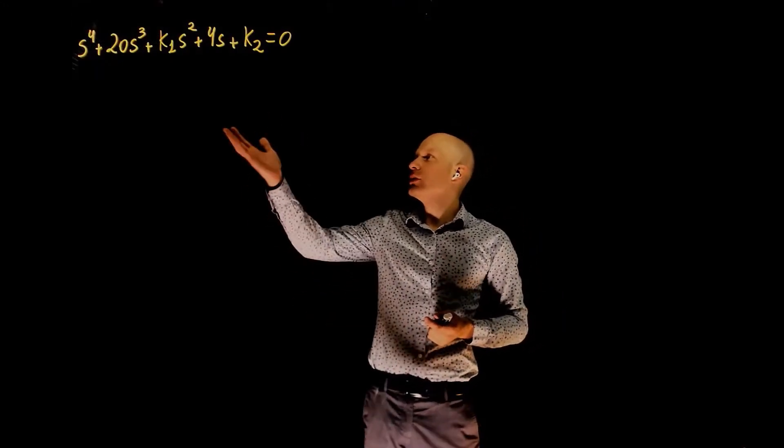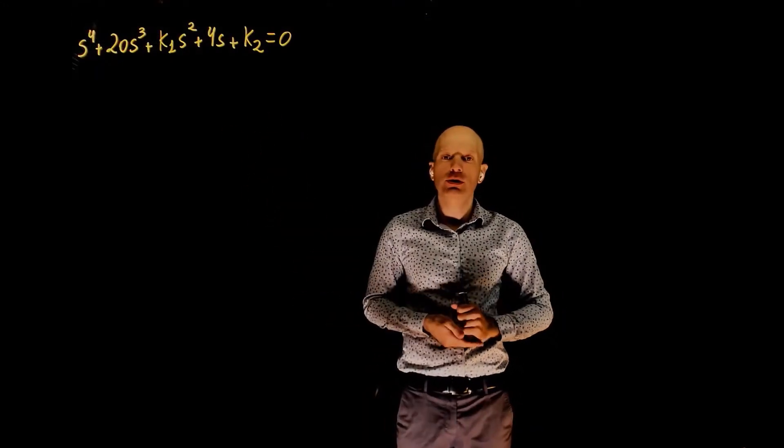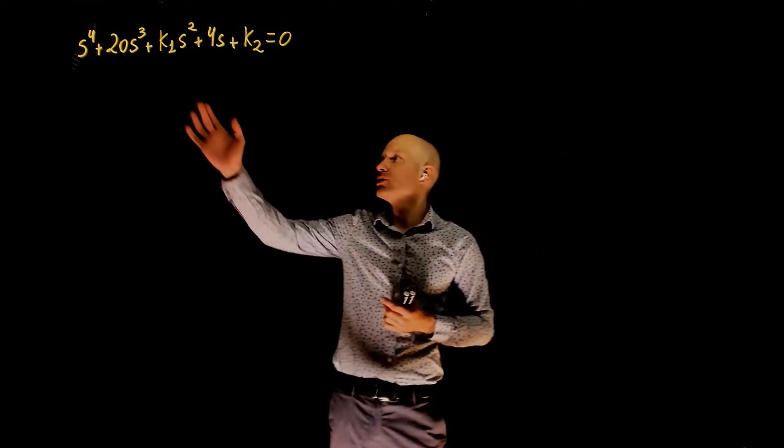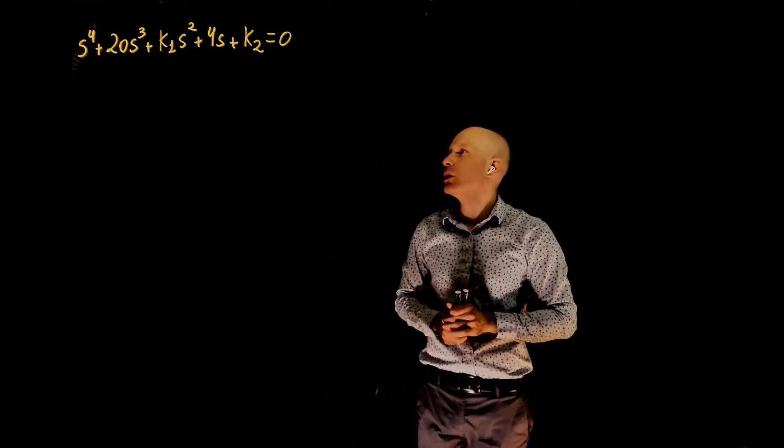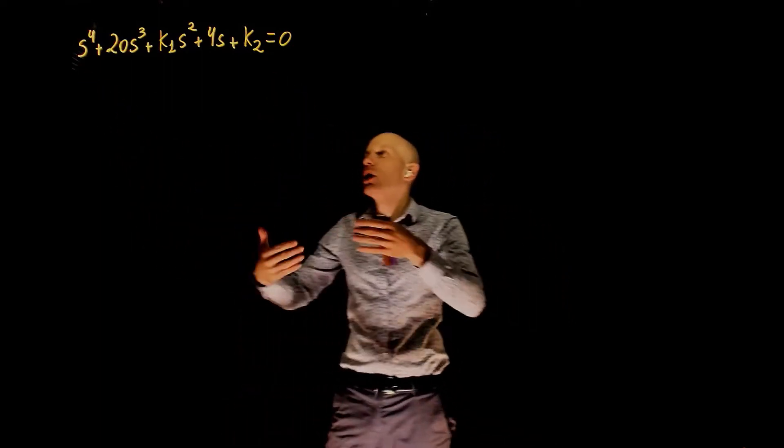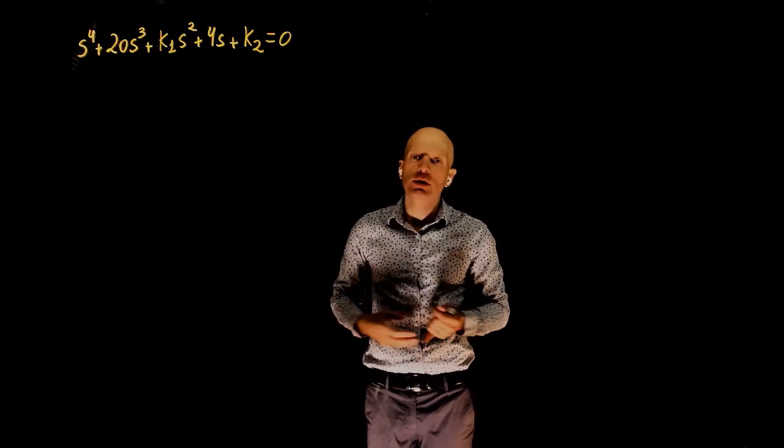In this last example, we have the characteristic equation of a closed-loop transfer function, and you want to evaluate the stability of this transfer function based on control gains k1 and k2. If this is the characteristic equation, of course, this part of the polynomial is the denominator of the transfer function, and that's what you need to evaluate.